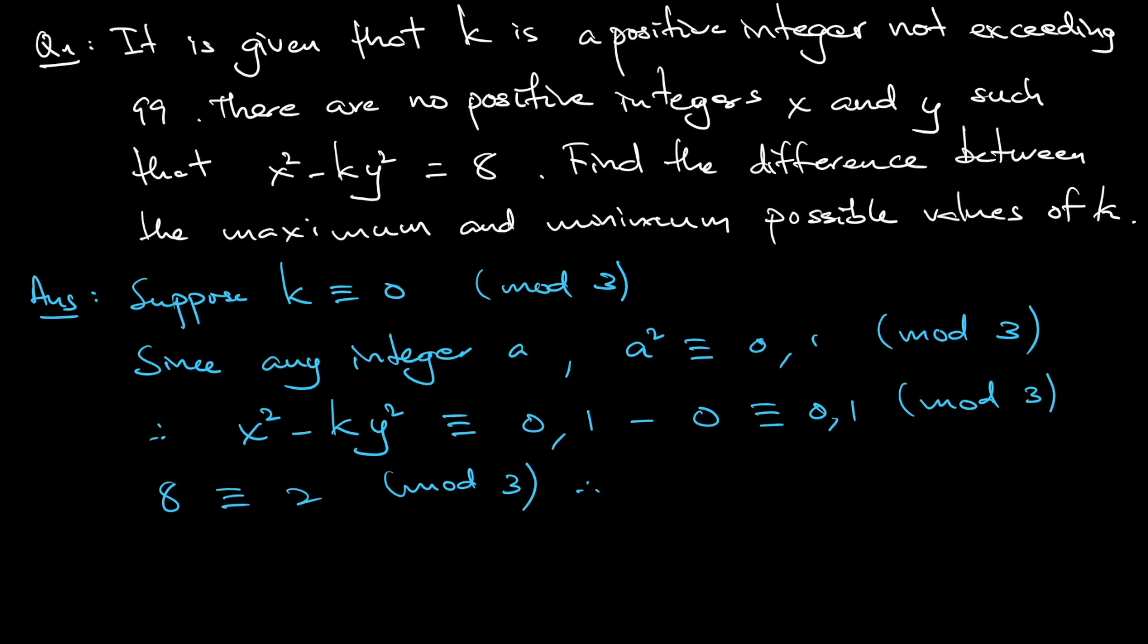So what does that mean? It's not equal, so no such positive integer x, y such that x² - ky² is equal to 8. So it satisfies the condition. The condition says no such positive integer x, y. So that means that the multiples of 3 are the possible candidates for k. I'm not saying that all possible values of k must be multiples of 3. I'm saying that all multiples of 3 can be k.